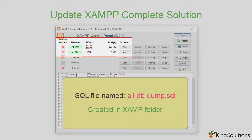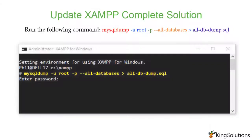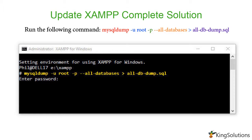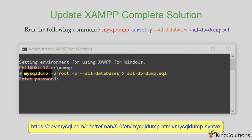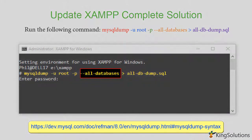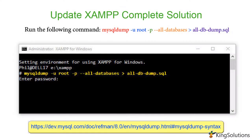Open the XAMPP control panel as an administrator and start both Apache and MySQL. Click on the Shell option and run the following command to export all the databases: mysqldump -u root -p --all-databases > alldbdump.sql. The mysqldump client utility backs up the original database object definitions and table data. The -u root option specifies the user, -p specifies the password, and --all-databases backs up all databases. alldbdump.sql is the name of the output file — you can change this if you wish. If prompted for a password, enter it and hit Enter to create the backup.